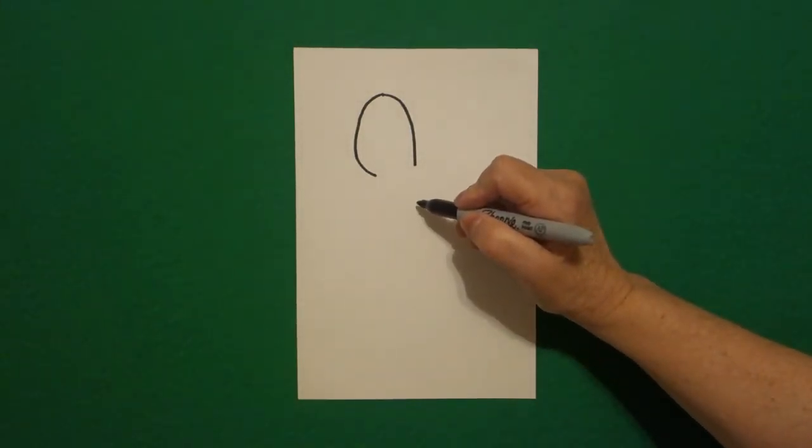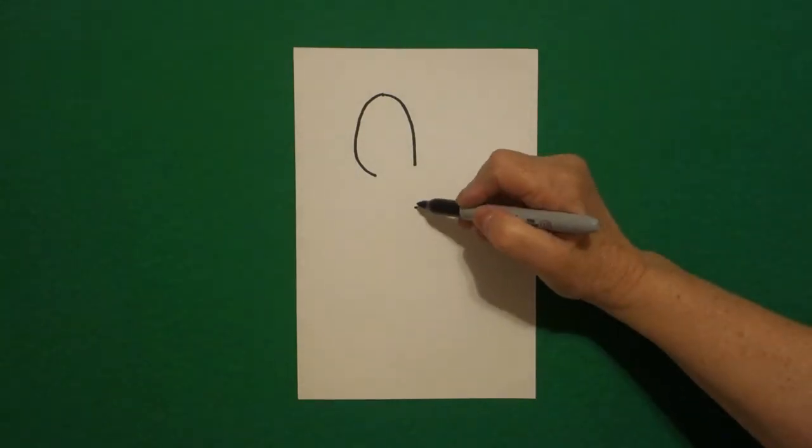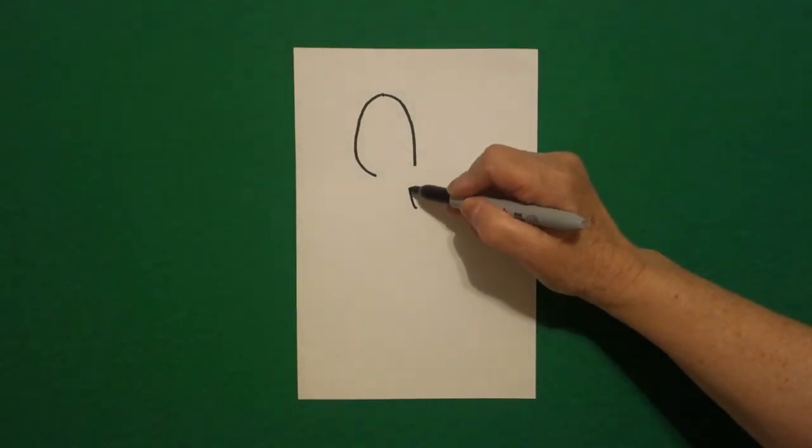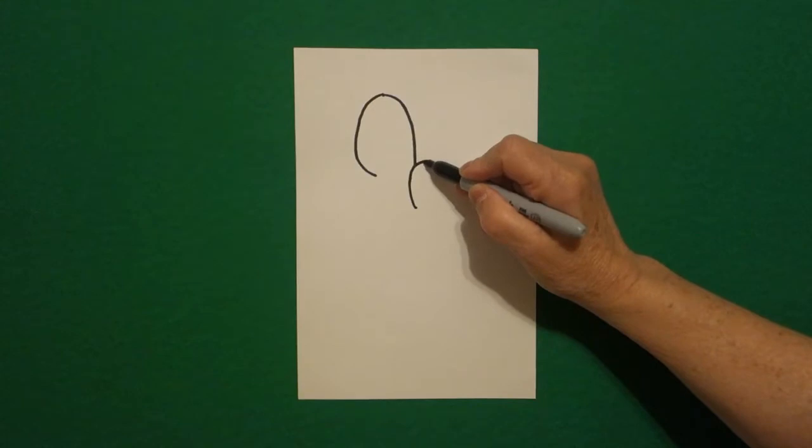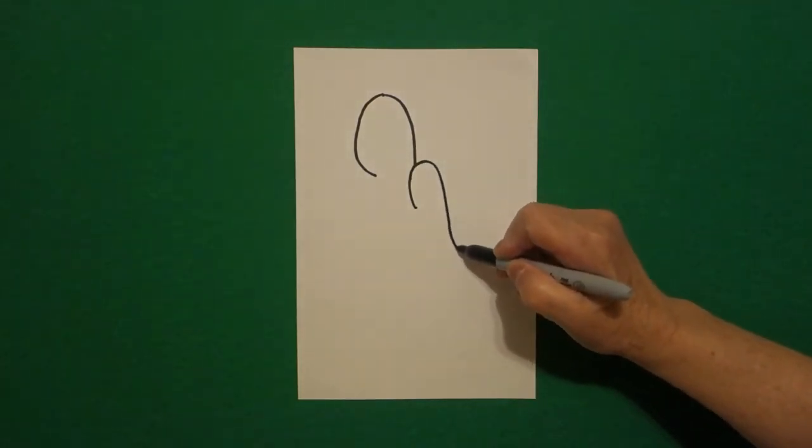Right about here I'm going to put a dot. And from that dot, I'm going to draw a straight line, curved line up, curved line down, out, and stop.